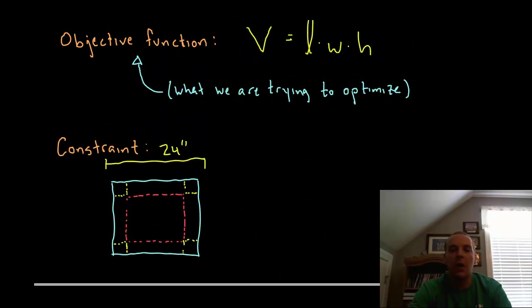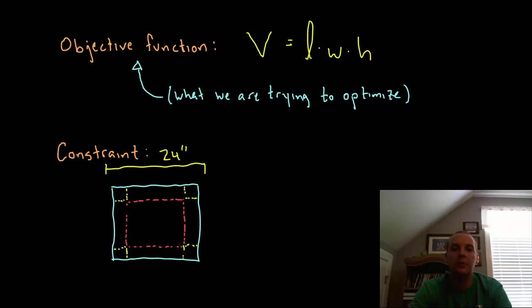All of these optimization problems will have an objective function, something that you are trying to either maximize, like in this case volume, or minimize, like the cost of manufacturing some goods. It will be a maximum or a minimum value that we're looking for. Now there is a problem with our objective function. When you write the volume of a box as length times width times height, that's going to be too many variables.